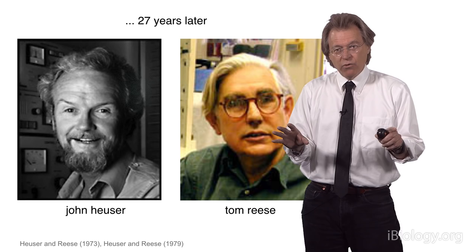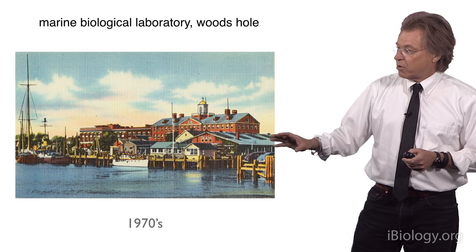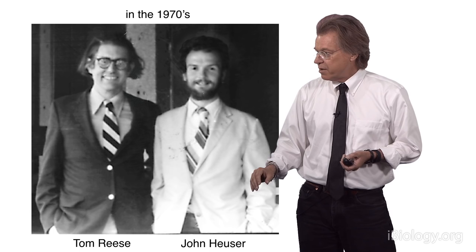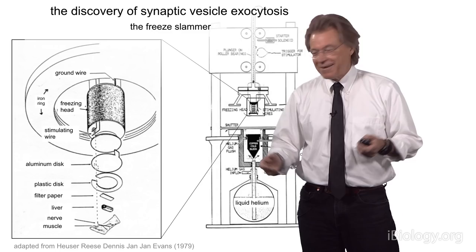He moved to the lab of Tom Reese, and together they worked out one of the most exquisite experiments in the history of science to prove that these vesicles actually fused. Some of those experiments were done at the Marine Biological Laboratory in Woods Hole in the 1970s. Here's Tom and John in the 1970s when these experiments worked — beautiful young men, dressed appropriately for the time.